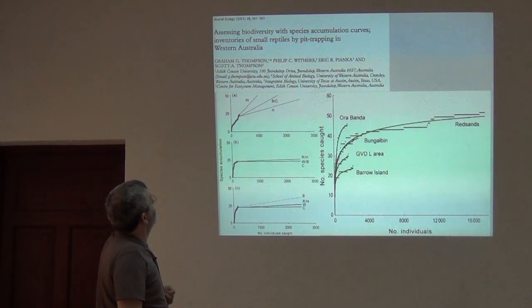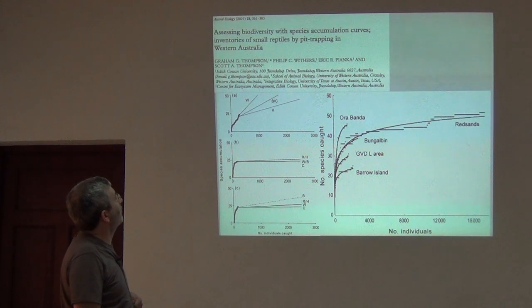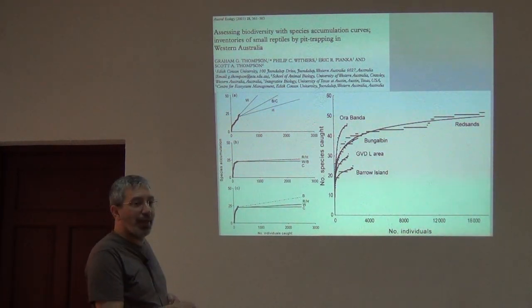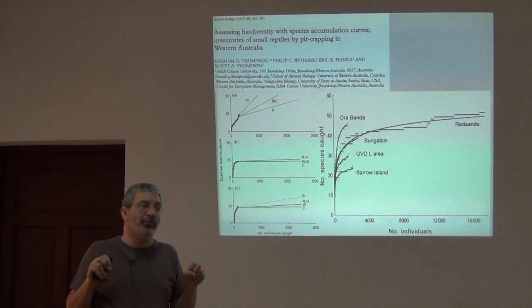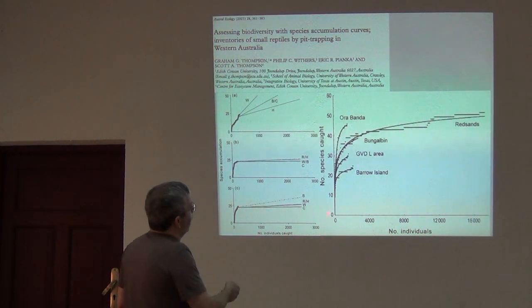Here you go, Herp guys. Assessing biodiversity with species accumulation curves. Inventories of small reptiles by pit trapping in Western Australia. And, we can see number of individuals. So, again, it's the unit of effort is individuals. And the number of species caught.